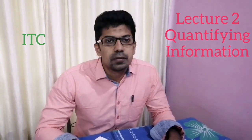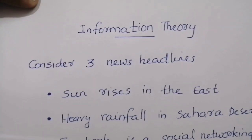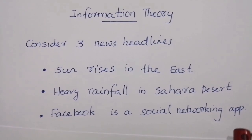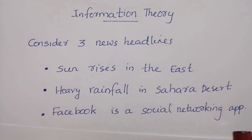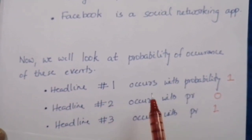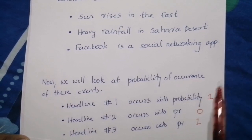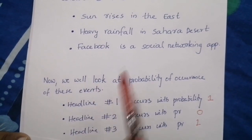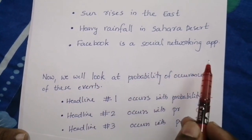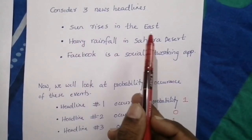Today we'll discuss how to quantify information. As discussed in the previous class, we considered three news headlines: one is 'Sun rises in the east,' second is 'There is heavy rainfall in Sahara Desert,' and third is 'Facebook is a social networking app.' Which news headline will give you the maximum surprise? The headline 'Sun rises in the east' occurs with probability one, 'Heavy rainfall in Sahara Desert' occurs with probability almost zero, and 'Facebook is a social networking app' also occurs with probability one.